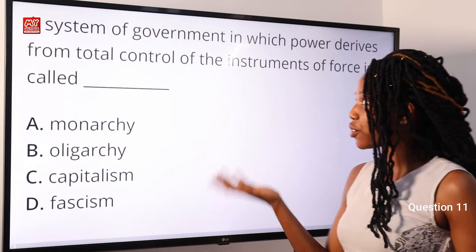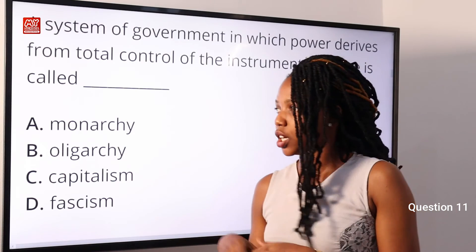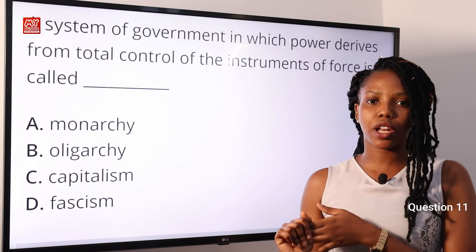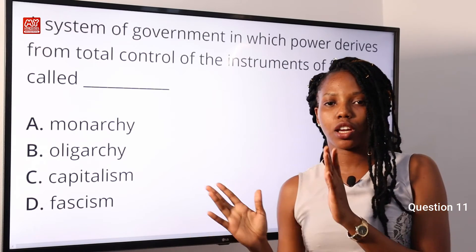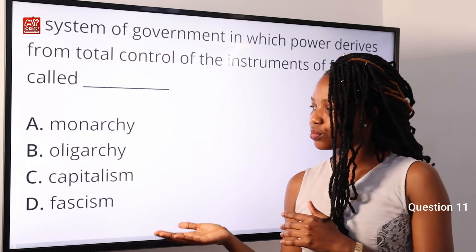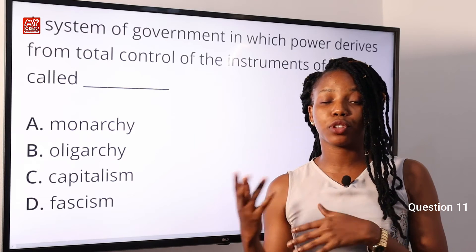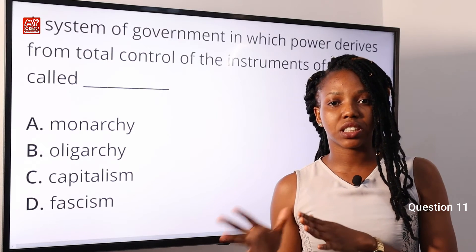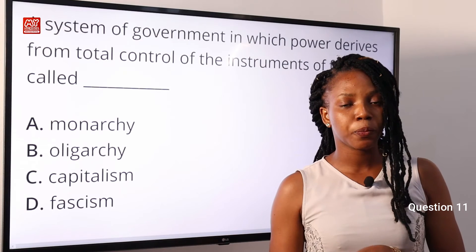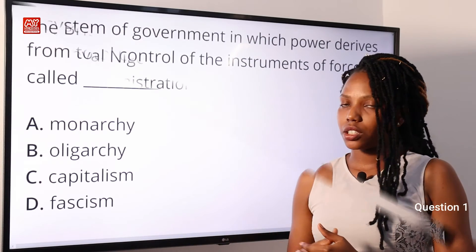Question 11: A system of government in which power derives from total control of the instruments of force is called — A: monarchy; B: oligarchy; C: capitalism; D: fascism. Monarchy is headed by a king or queen. Oligarchy places power in the hands of a few. Capitalism is an economic system where production is controlled by private individuals. Fascism is a system headed by a dictator who controls all activities of the state. Option D is the correct answer.